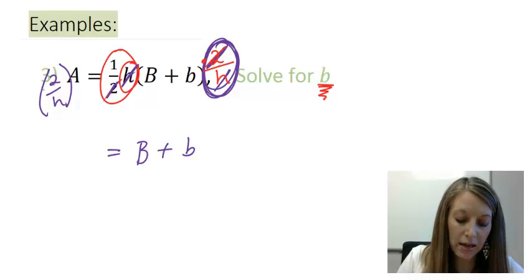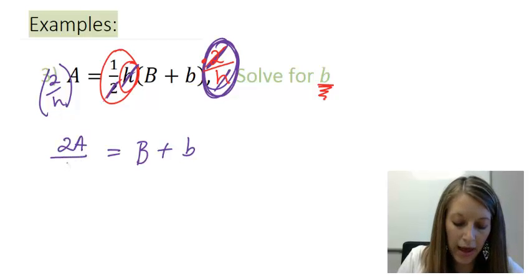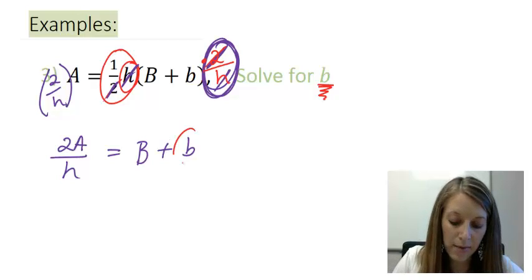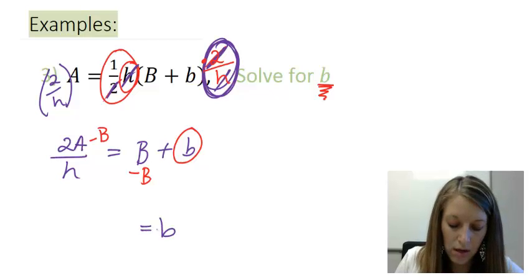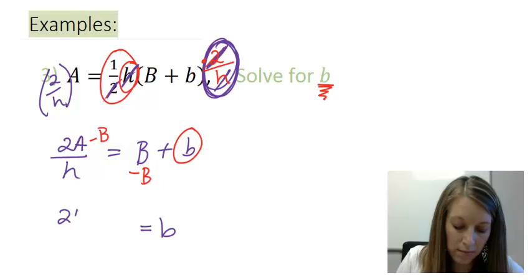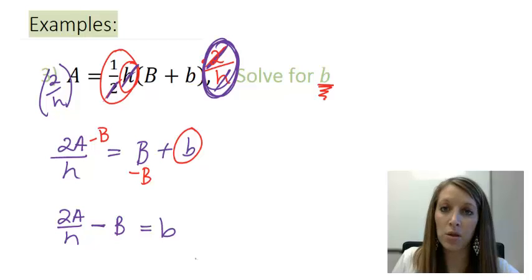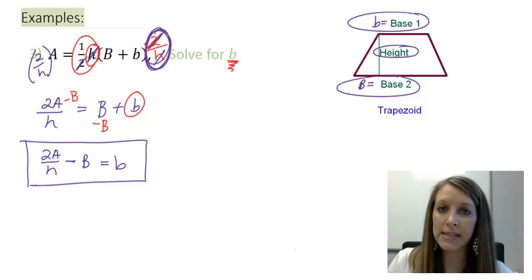On the left, I can make this a multiply fractions where I multiply straight across. On the top, 2 times a, or 2a, over h. Now, to isolate my little b, it should be really easy. I just subtract over my capital B from both sides. So, my little base is equal to 2 times my area divided by my height, subtracting the length of my long base. And I have my short side or my short base isolated. So, I have done what I set out to do in this problem.